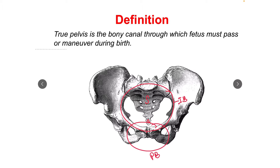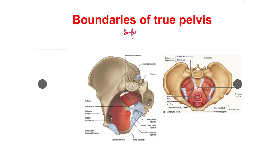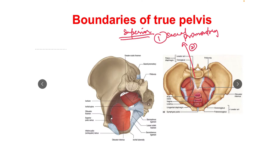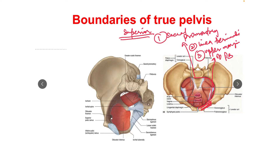अब हम देखेंगे इसकी boundaries क्या हैं। पहले हम superior boundaries देखेंगे। Superior boundaries of true pelvis: superiorly पहली boundary है sacral promontory। इसके बाद sacral promontory से symphysis pubis तक जो line है उसको हम कहते हैं linea terminalis — यह second boundary है। And the third one is the upper margins of the pubic bones.